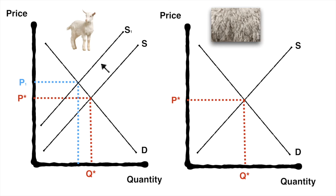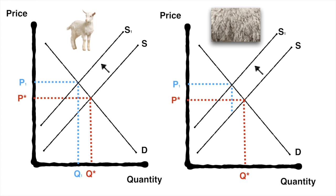The decreased number of sheep being used for meat results in less of their wool available. Just understand that less sheep being used for lamb meat results in less wool as a byproduct. On the graph, this will be represented by a shift leftward of the supply curve for wool. Similar to the market for lamb meat, this results in a higher equilibrium market price and lower equilibrium quantity.